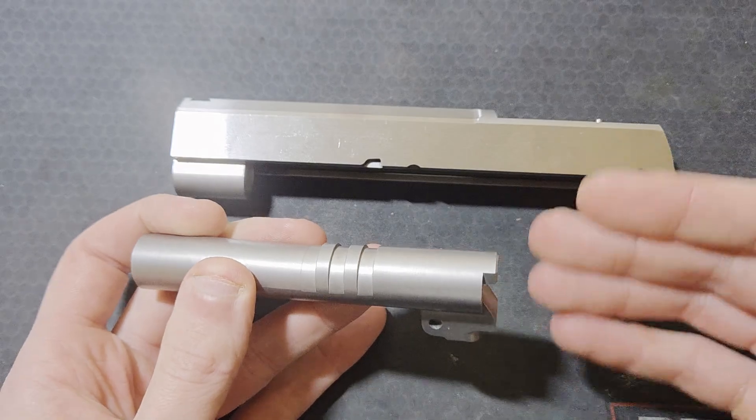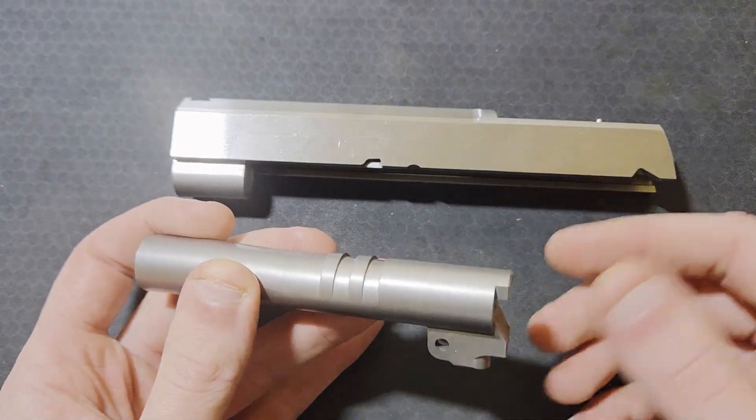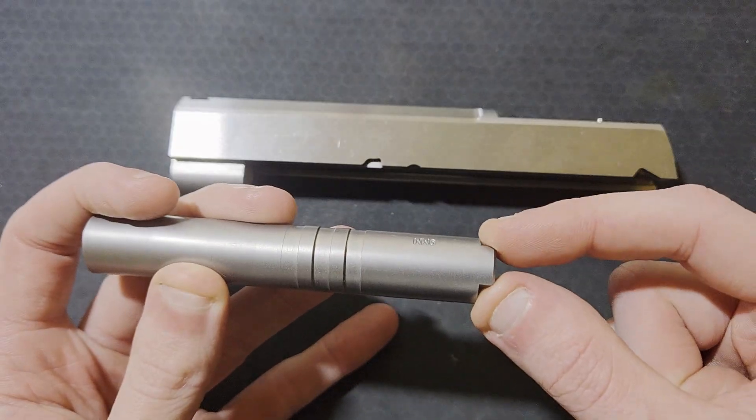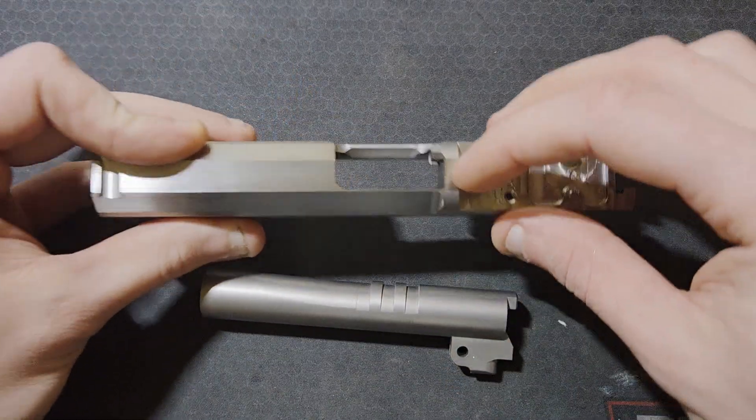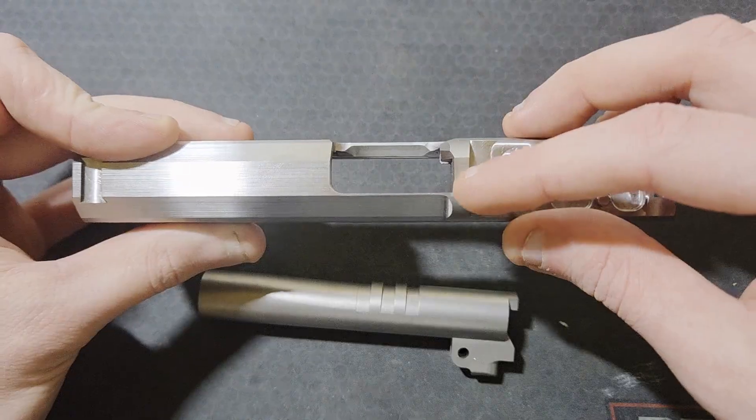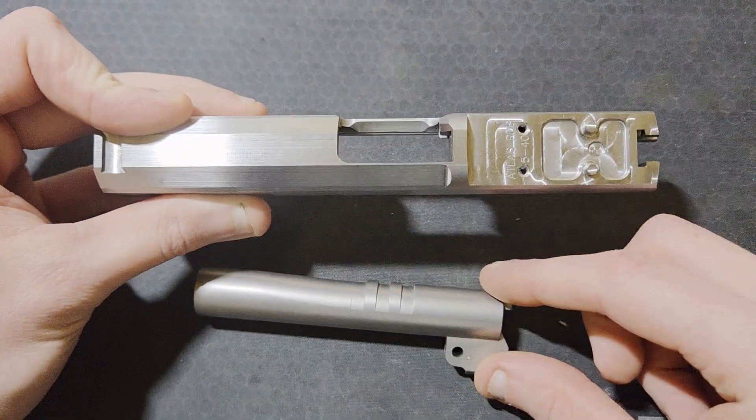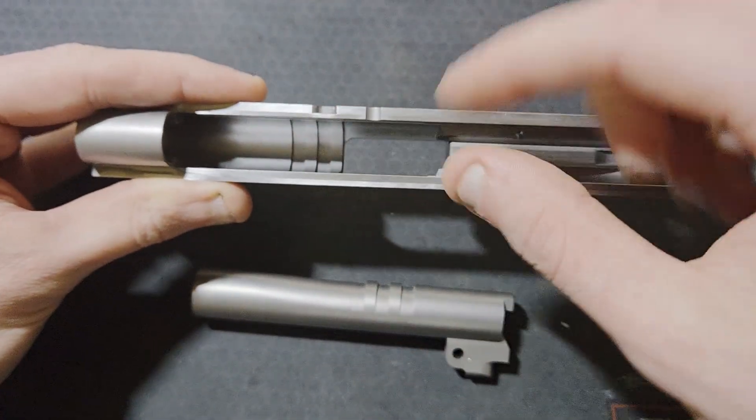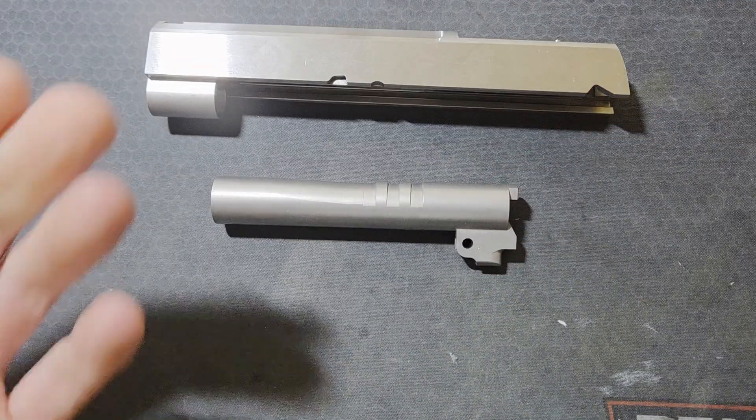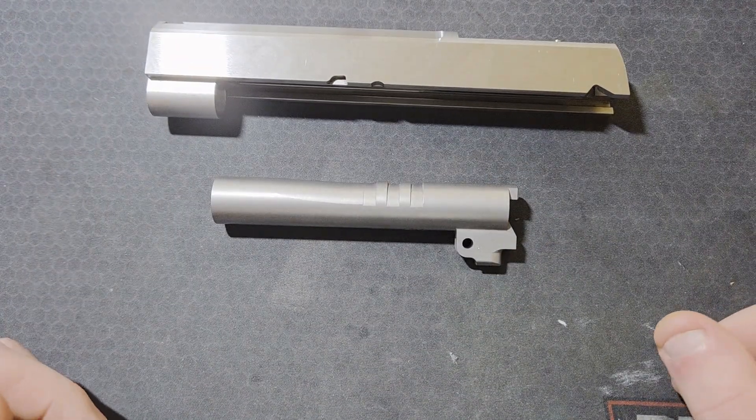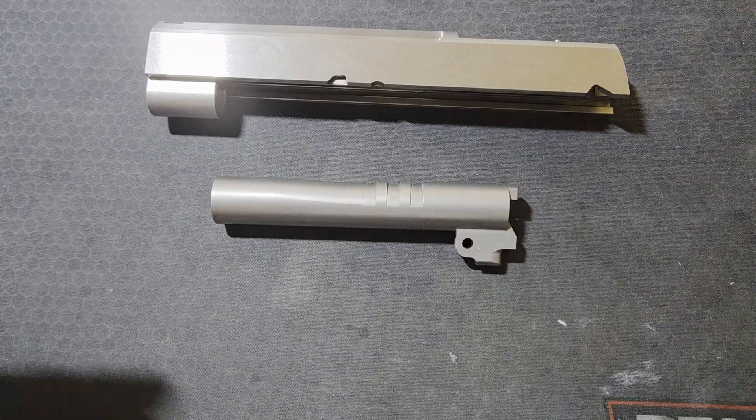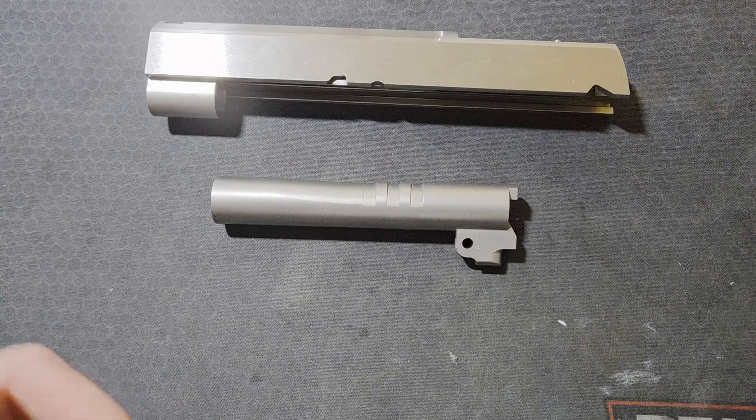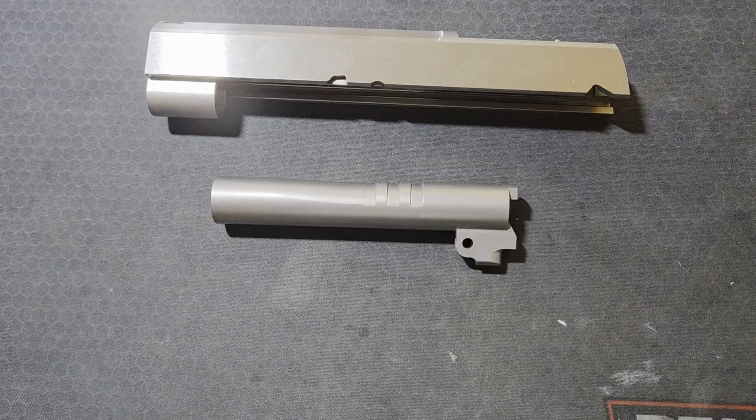The barrel hood width formula or calculation is used to determine how much material needs removed from each side of the barrel hood so that it matches the breach face width while keeping the chamber end of the barrel centered in the slide barrel passage. I will be presenting my own version of the hood width formula, one with a variable assigned to each term, even the intermediate ones, and hopefully with the included diagrams and explanation, it will be clear.